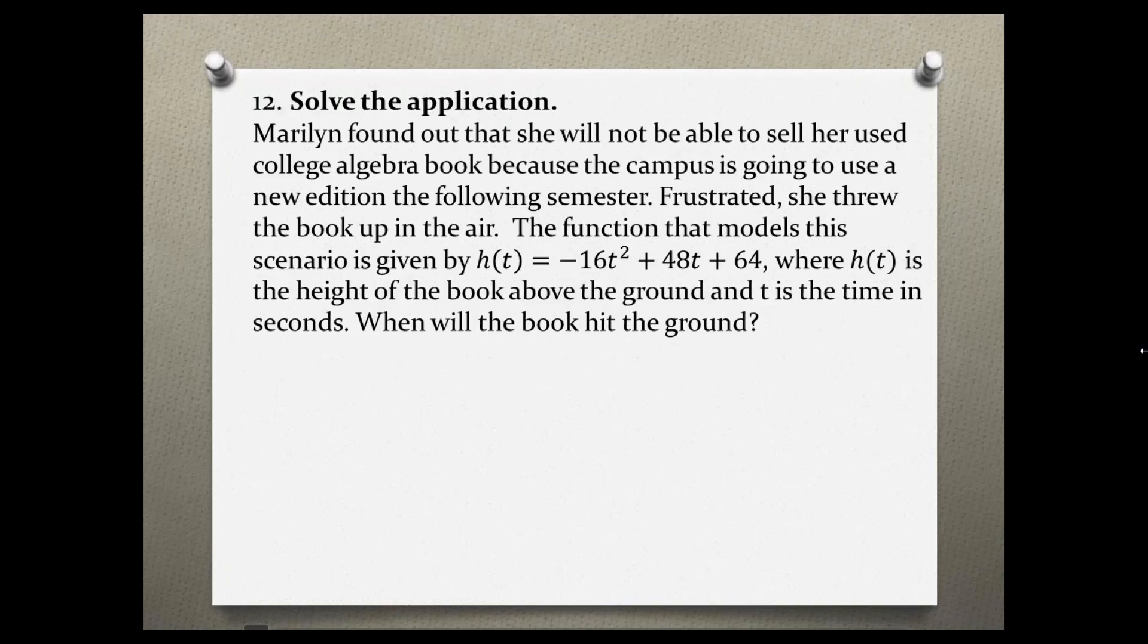The function that models this scenario is given by h equals negative 16t squared plus 48t plus 64, where h is the height of the book above the ground and t is the time in seconds. When will the book hit the ground?